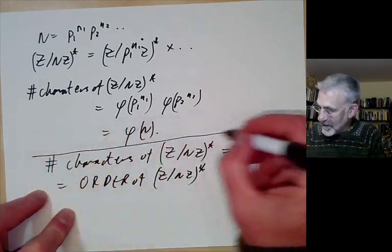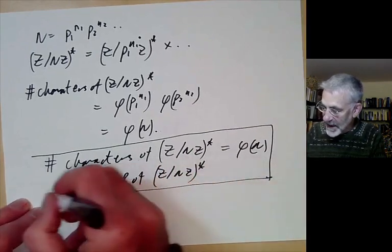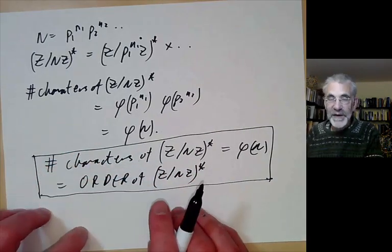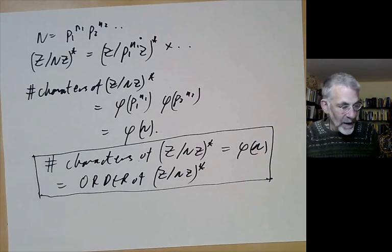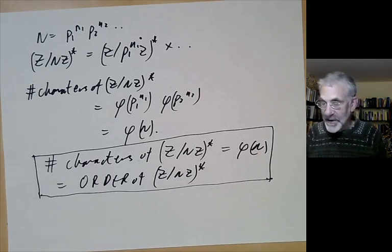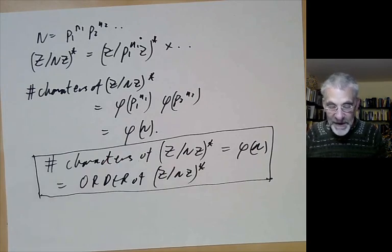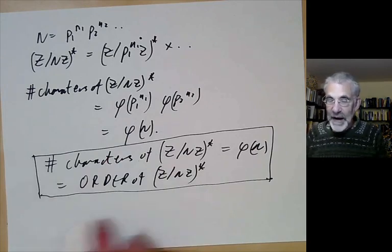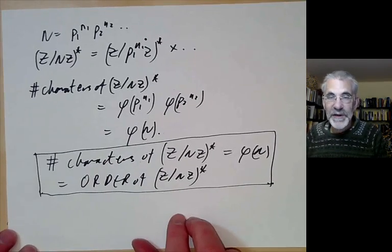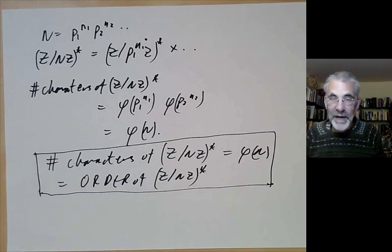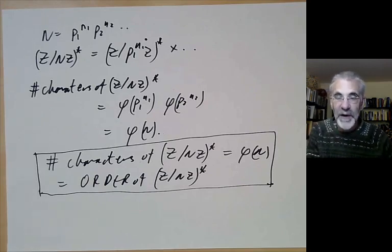So the number of characters of Z modulo nZ star equals phi(n), which equals the order of Z modulo nZ star. This is a basic fact we'll use next lecture. The next lecture will cover more properties of characters and L-series; the lecture after that will show how to deduce Dirichlet's theorem from non-vanishing of the Dirichlet L-series; and the final lecture will show that the Dirichlet L-series are non-zero at s equals 1.